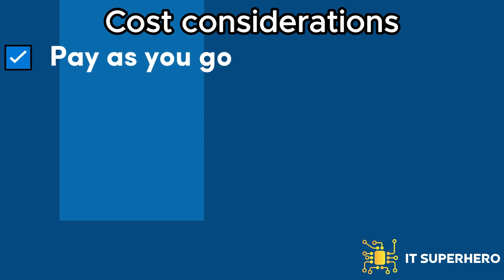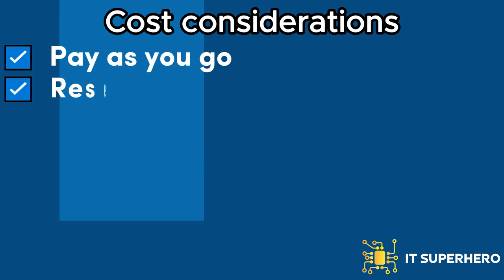Pay-as-you-go: this model charges users based on actual usage, typically by the hour or minute. Users pay for the resources they consume, such as compute instances, storage, or network bandwidth. It offers flexibility as users can scale resources up or down as needed and only pay for what they use. Reserved instances: cloud providers often offer the option to reserve instances or resources for a fixed term, typically one to three years, with significant discounts compared to pay-as-you-go rates.